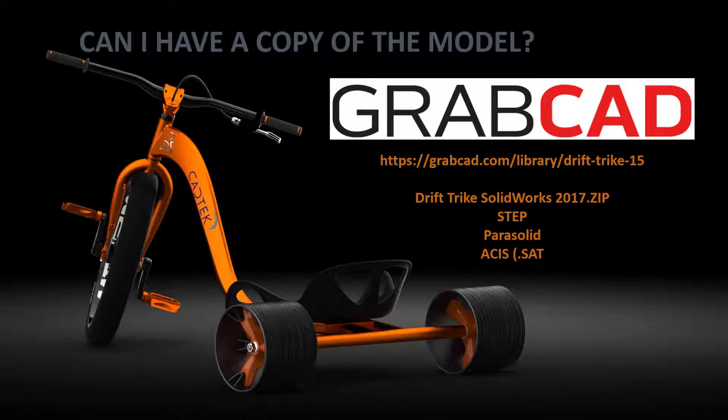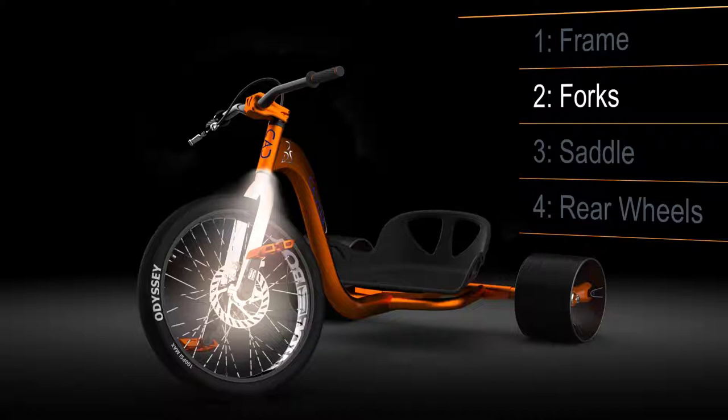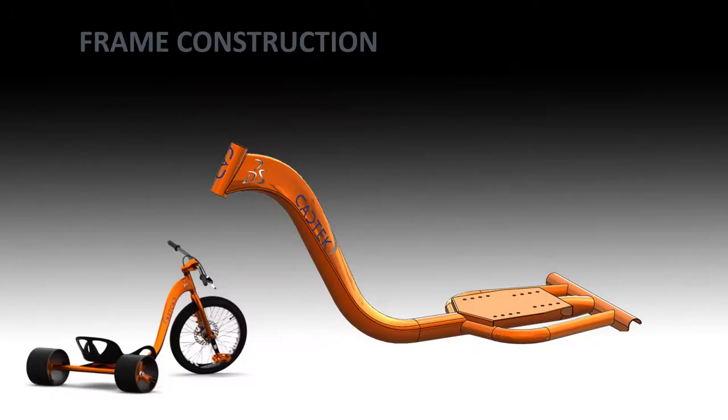The other components I already had modelled will be demonstrated during this series of tutorials. There is a lot to cover in this design, so I've broken it down into four separate tutorials. Part one covers the frame design; subsequent tutorials will look at the fork design, the saddle, and the rear wheels. There are different modelling techniques useful for each of these, which we'll be explaining in further detail.